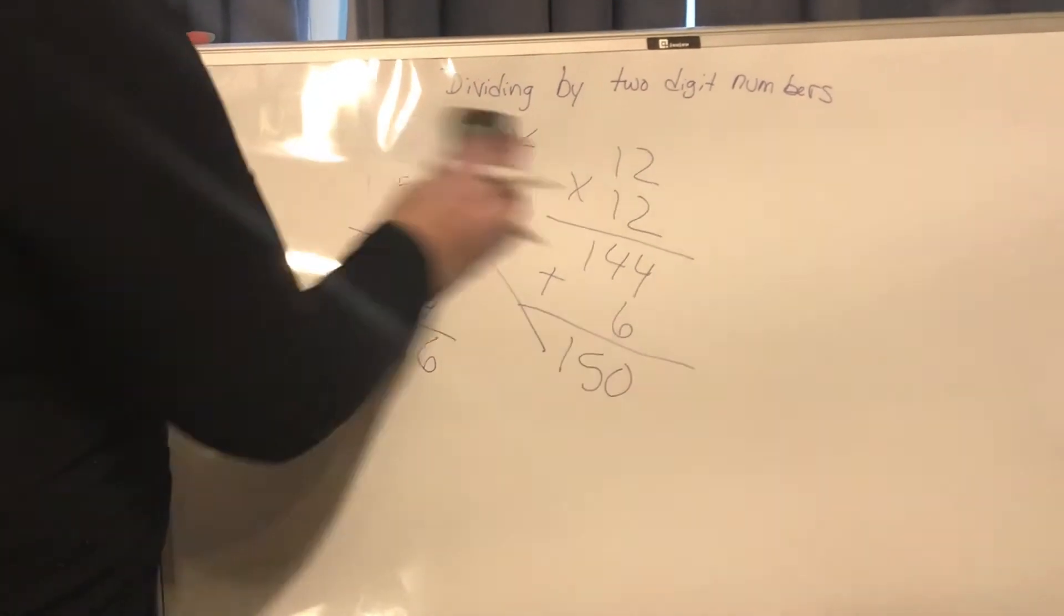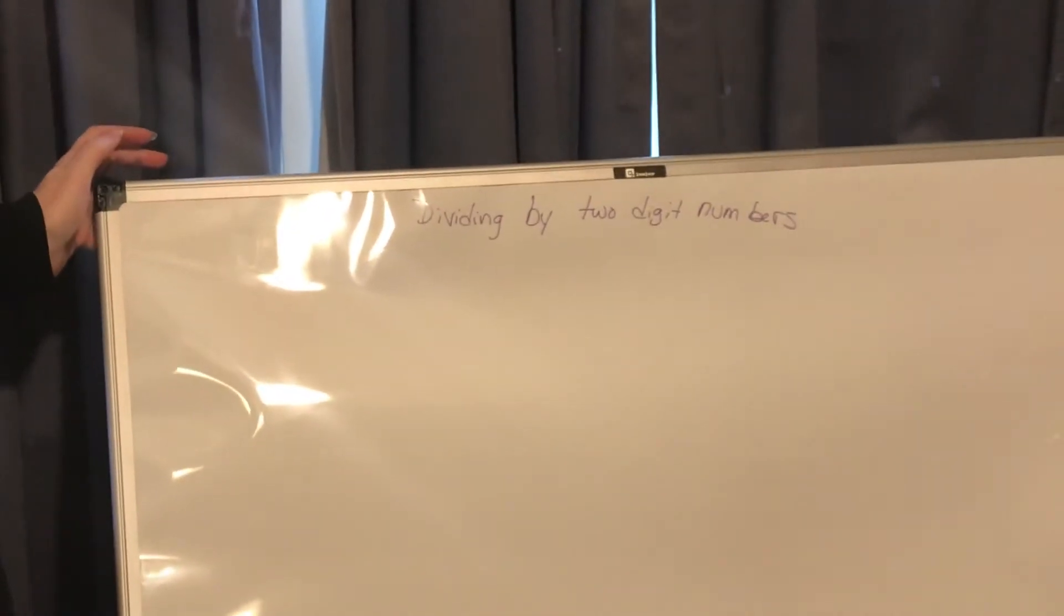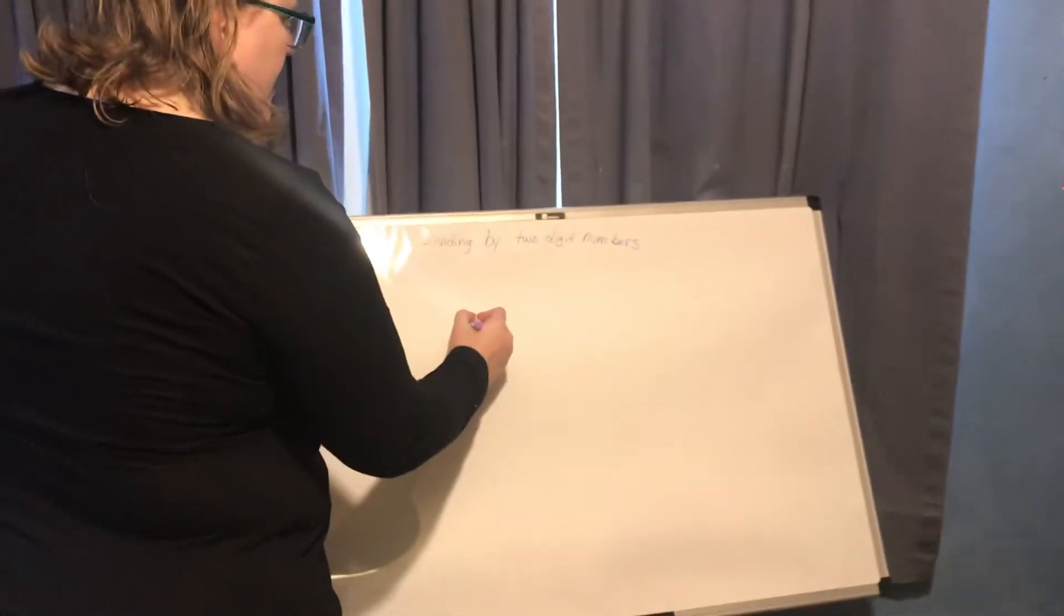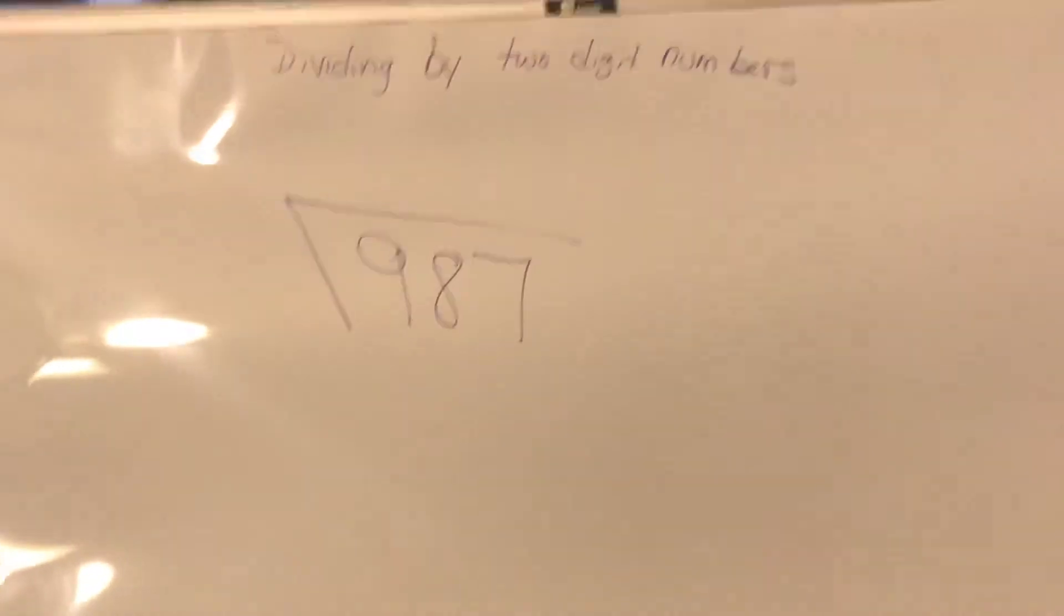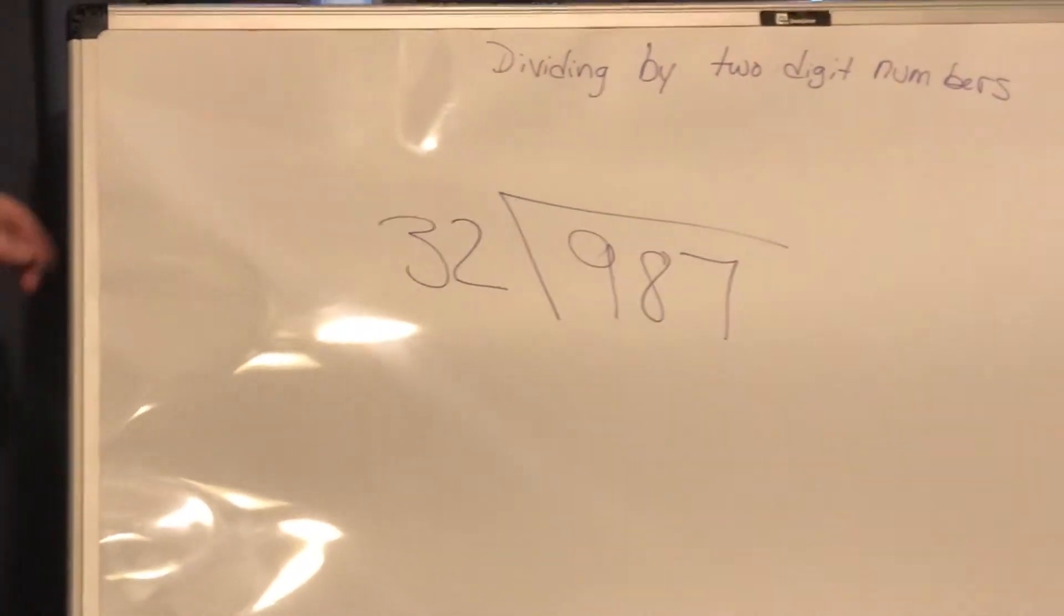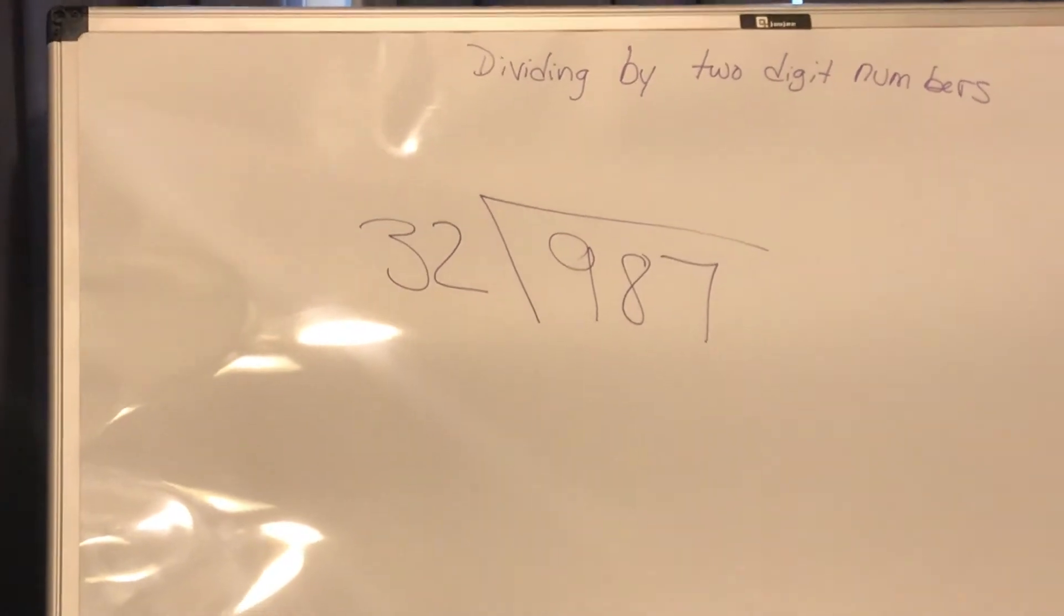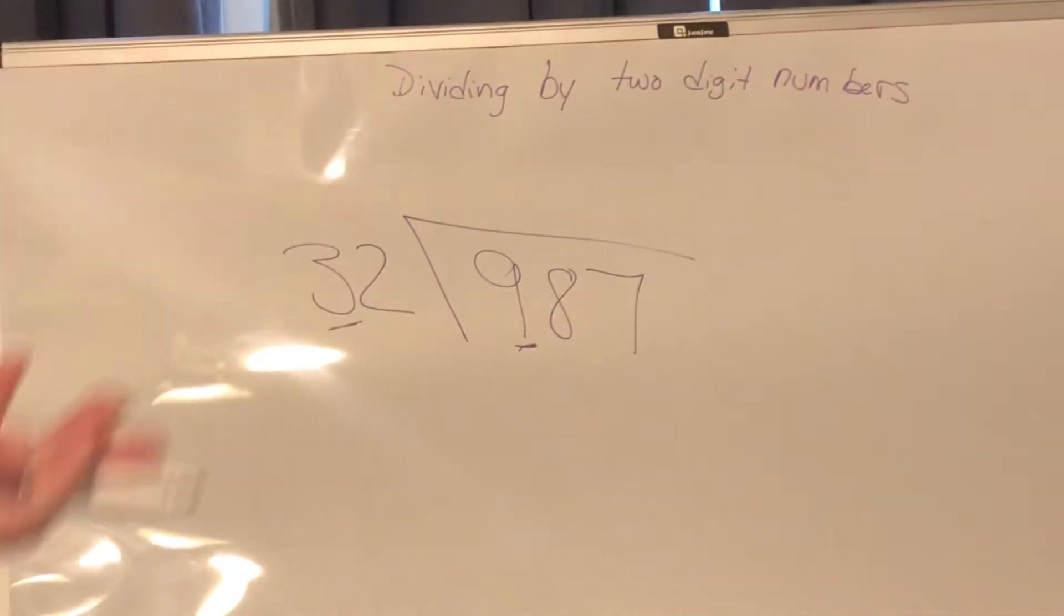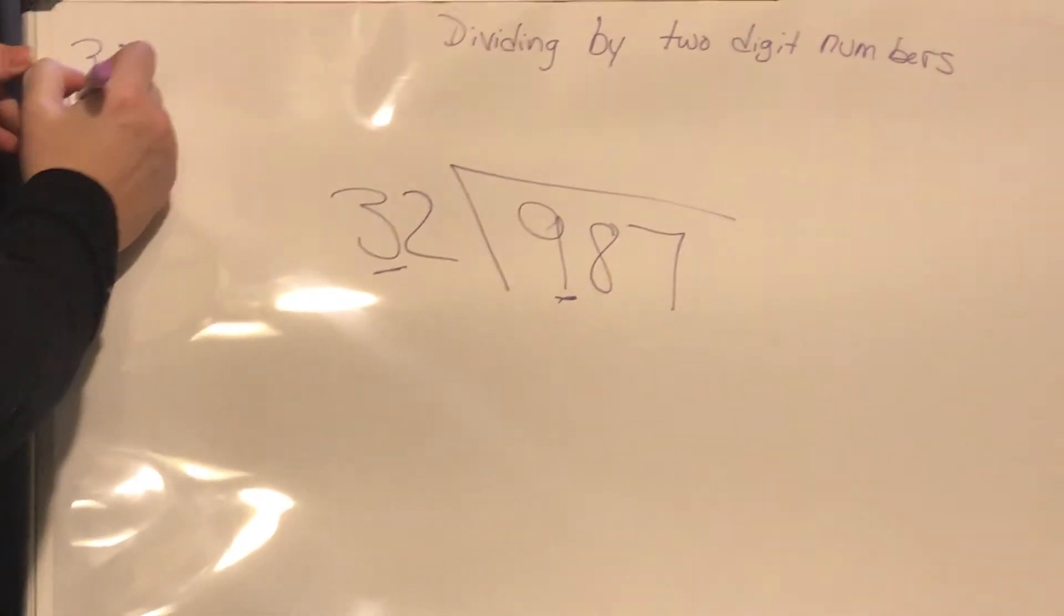All right, let's look at another example found on page 482. We have 987 divided by 32. Now we're getting into some bigger numbers and nobody has the 32s memorized, right? So a little trick we can do is ask ourselves how many times can 3 go into 9, and that's 3 times. So off to the side I'm going to see what 32 times 3 is.